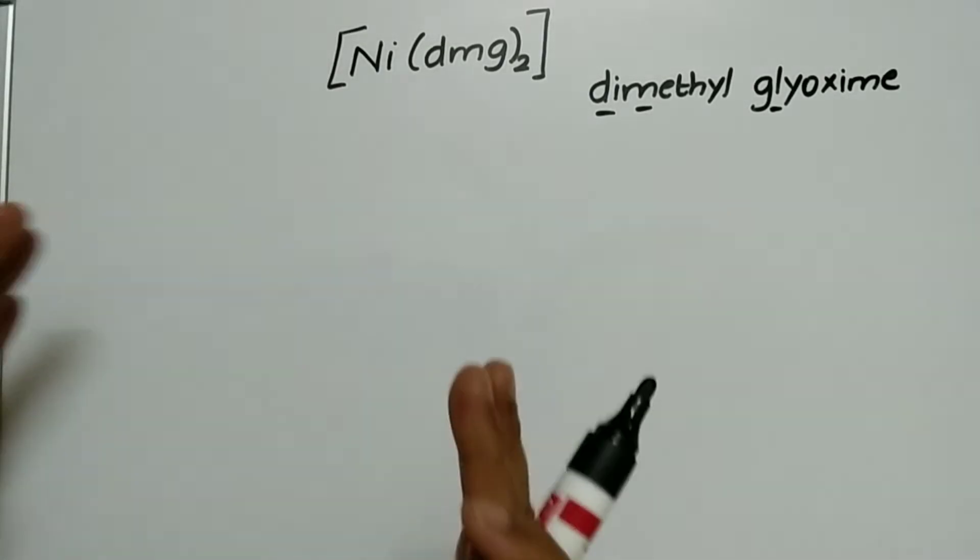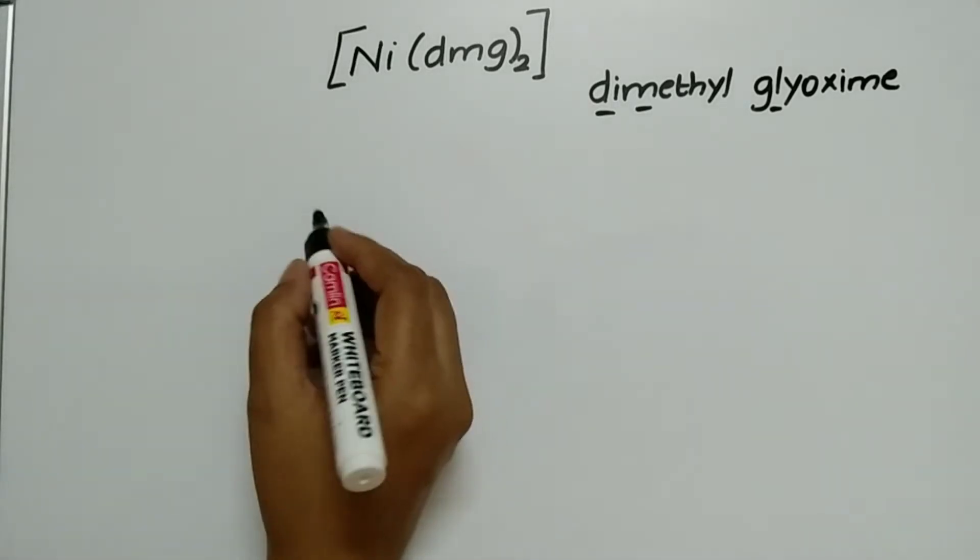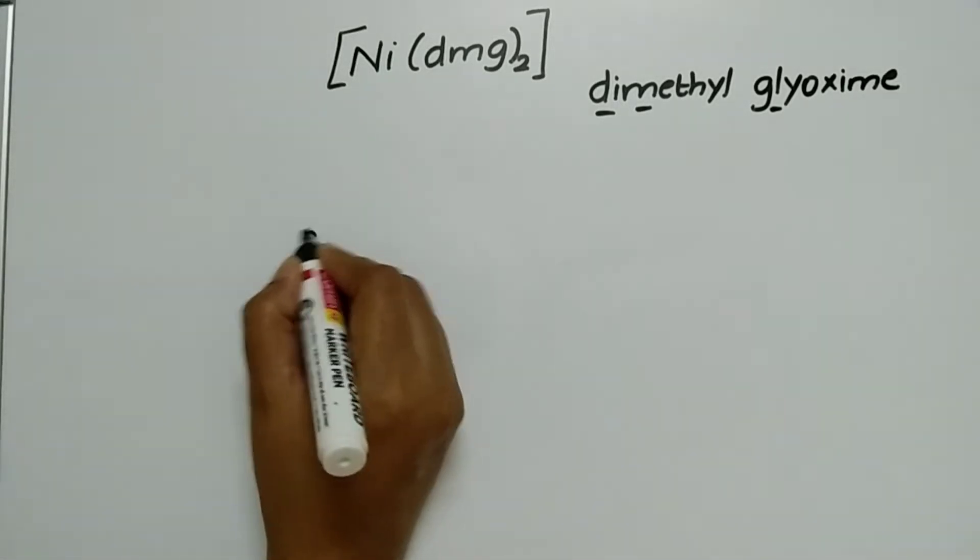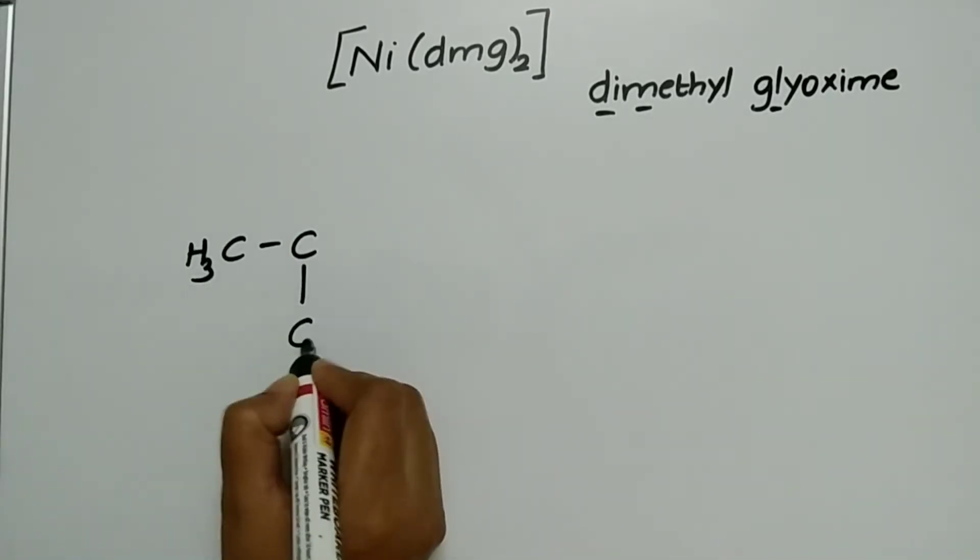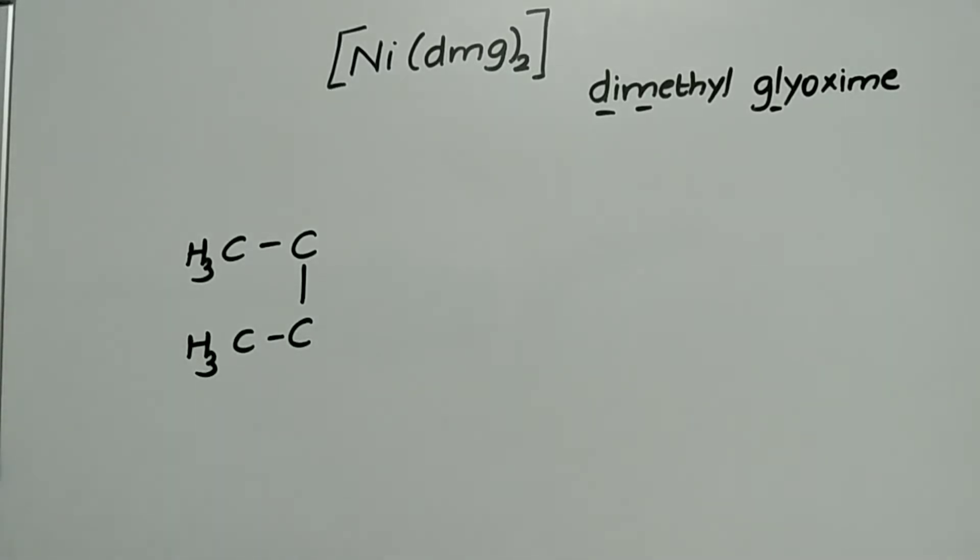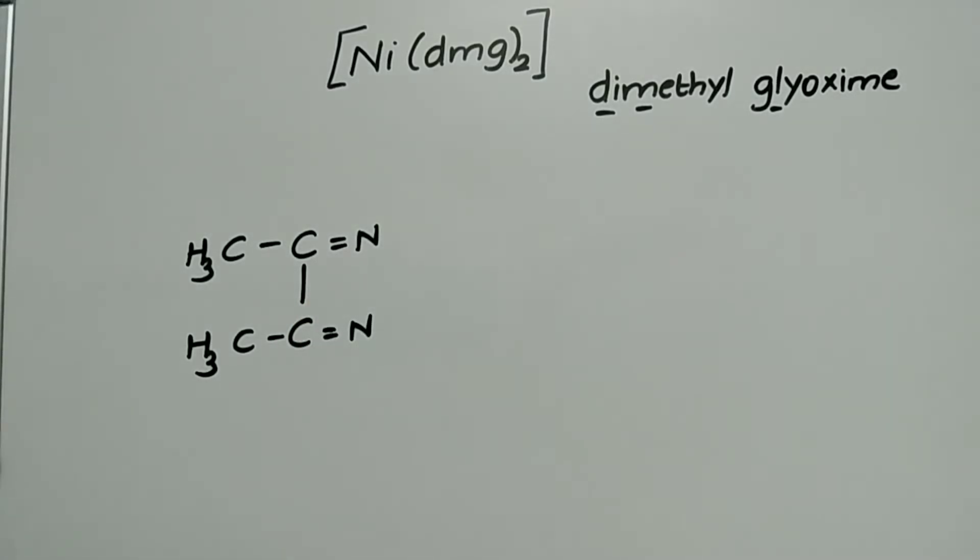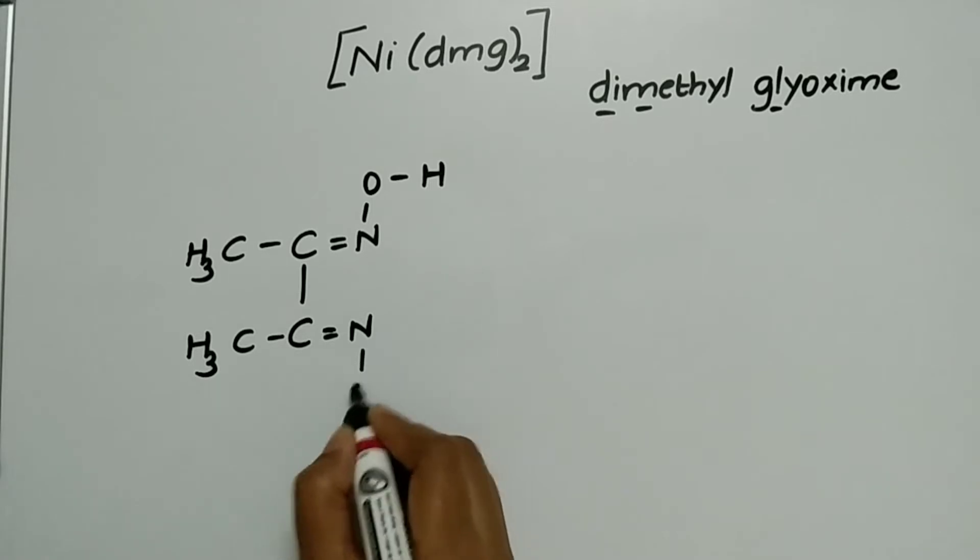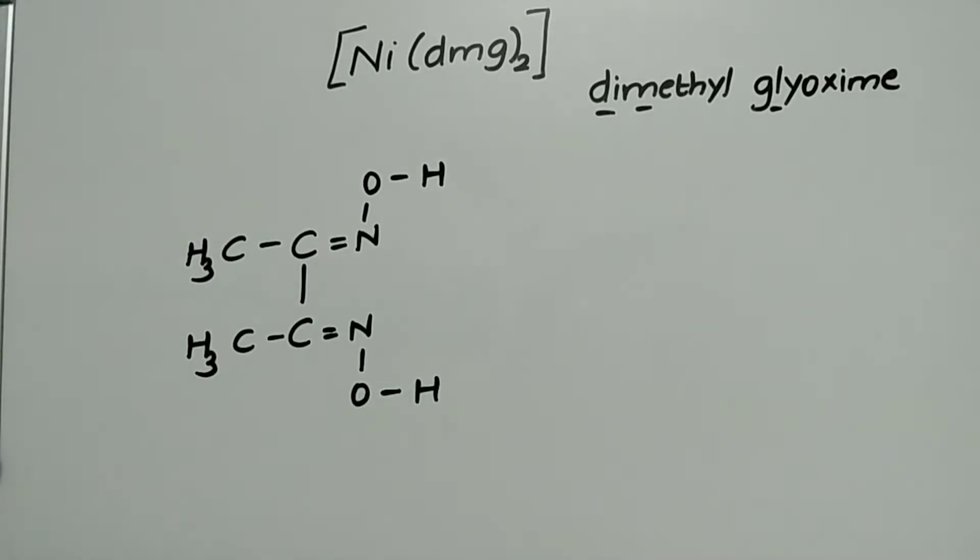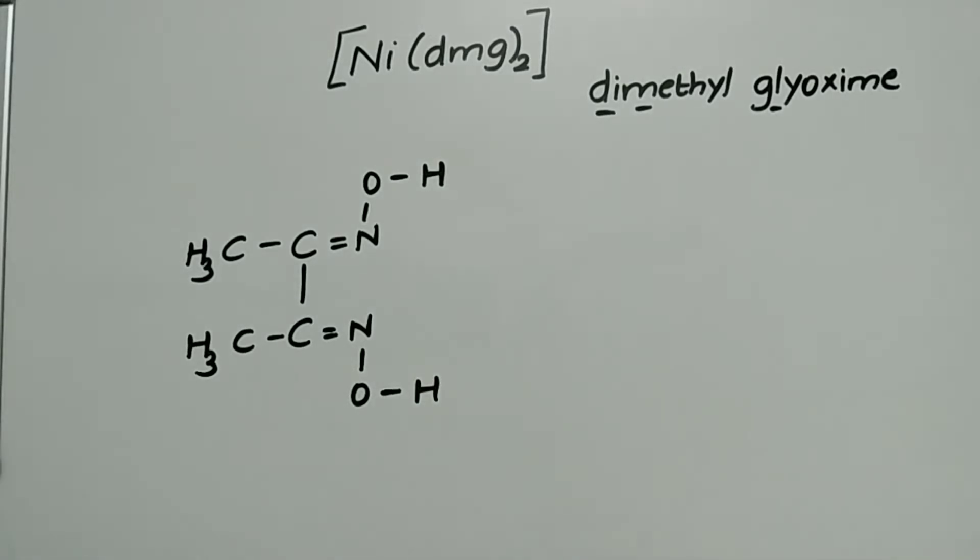I will draw the structure first. Let us see the structure of DMG then we will find the properties based on VBT. The structure for DMG is carbon attached to methyl group, carbon attached to methyl group. Double bond N, carbon attached to nitrogen with a double bond, it is attached to oxygen and H. Why I am writing like this? Because just to show you that there are two acidic hydrogens. Two acidic hydrogen means it can be removed. Acidic hydrogen means which can be removed or donated.